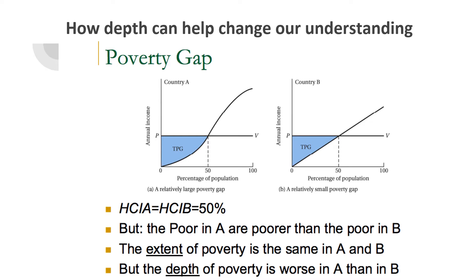The variance in poverty gap can be seen in two graphs comparing country A with country B. Both countries have a 50% poverty rate, but they are not the same when you look closer. Country A has a much higher poverty gap, with more people further away from the poverty line, while country B has an even distribution with fewer people far below the line. So while they have the same poverty rate on the surface, country A would be poorer than country B.